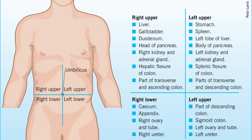One way to remember the major organs in each quadrant, moving from right to left, is the word GLASS, which stands for gallbladder, liver, appendix, stomach, and spleen.